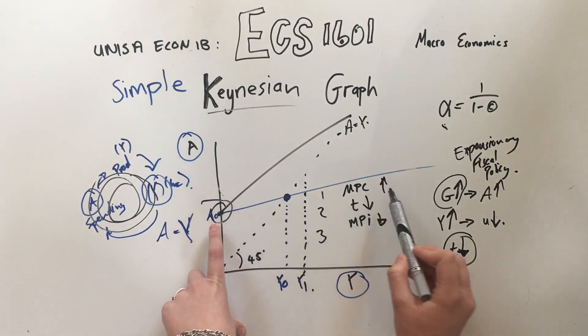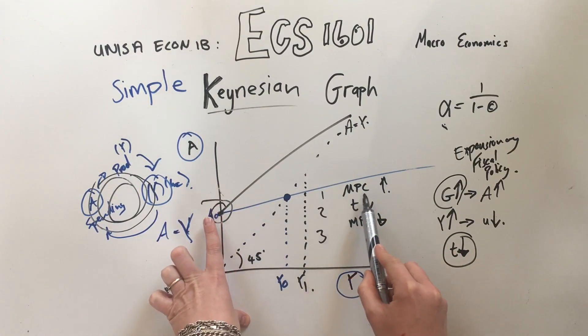Just a little bit of theory. To pivot this A up is marginal propensity to consume up, taxes down, marginal propensity to import down.